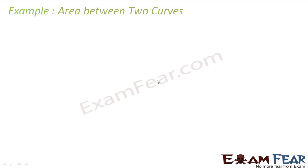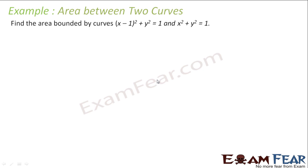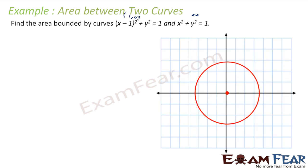Let's take one example. Here you have to find the area bounded by the curves (x-1)² + y² = 1 and x² + y² = 1. Both are circles. The first circle has center (0,0) and radius 1, and the second has center (1,0) and radius 1. So let's draw the first circle with center (0,0) and radius 1.